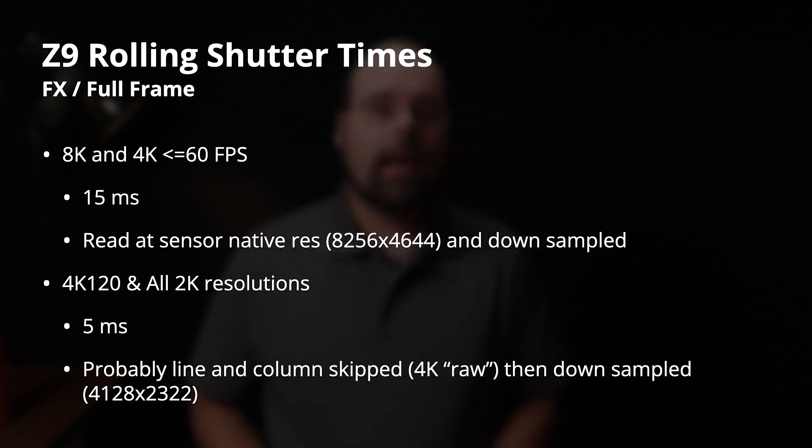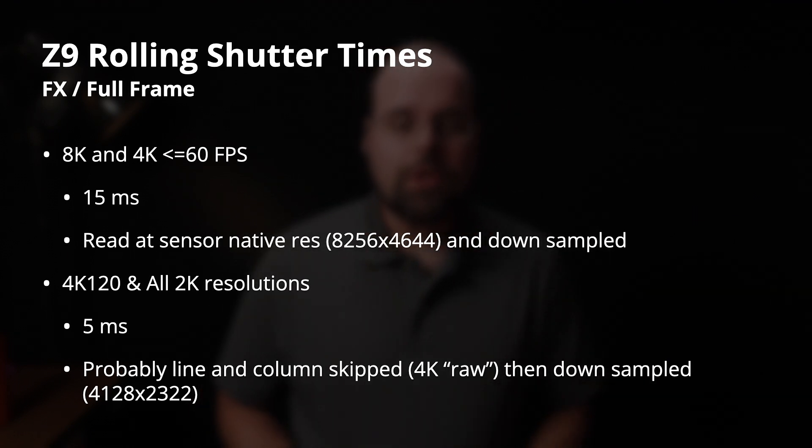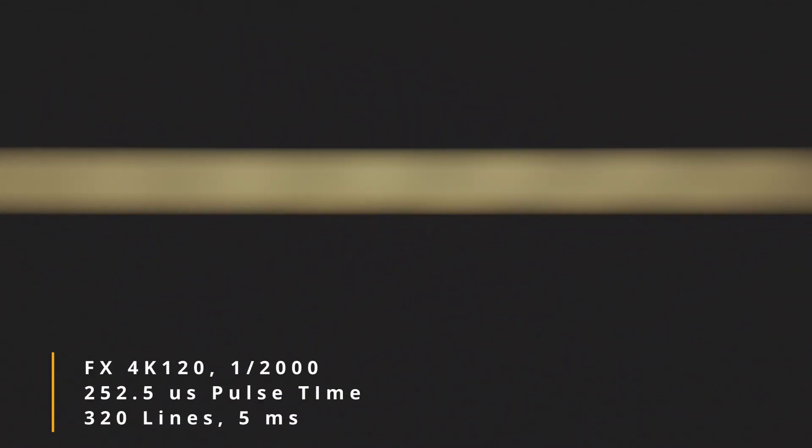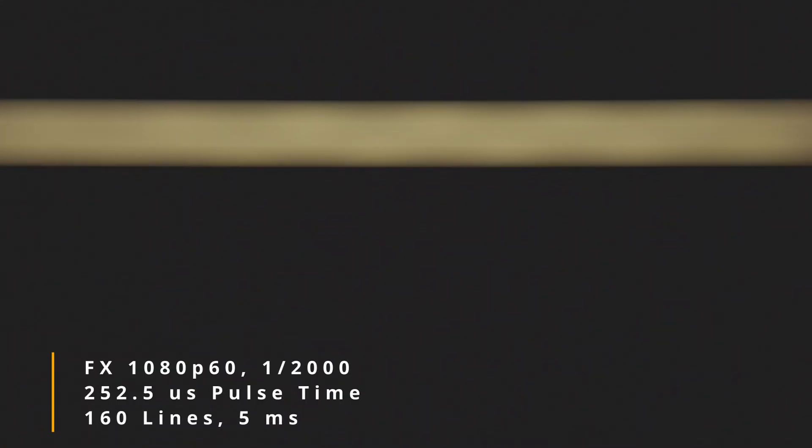When shooting at 4K 120fps and all 2K resolutions, the rolling shutter performance dramatically improves — down to 5 milliseconds. This is easily the best number I've seen on any full frame 8K-capable camera doing 4K or 2K output. Clearly this is not being read and downsampled — this is being done with some form of line skipping. And for whatever reason, Nikon is using this for all 2K resolutions whether slow or fast, as well as 4K 120fps.